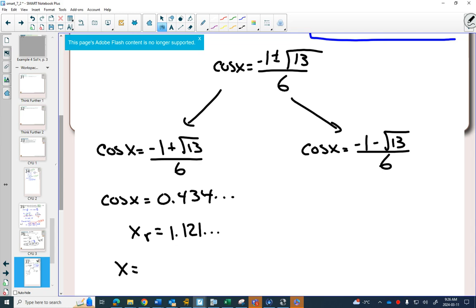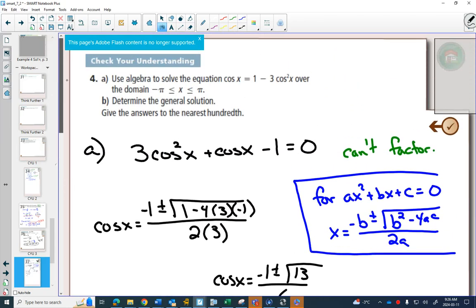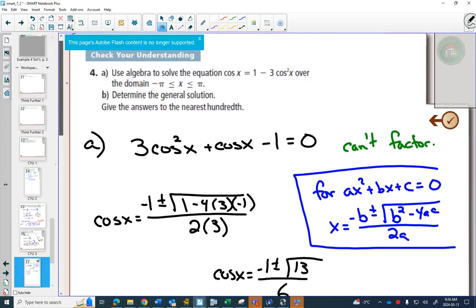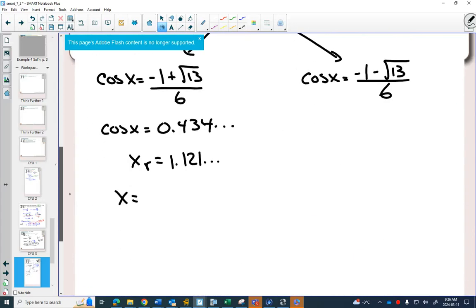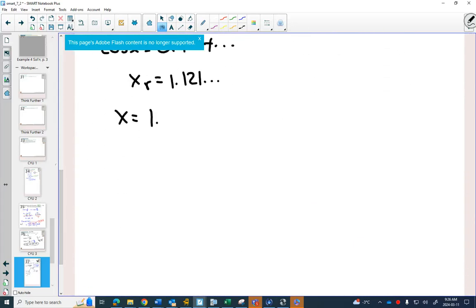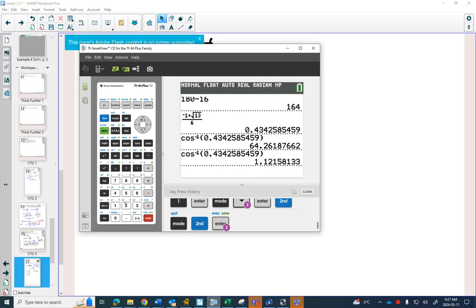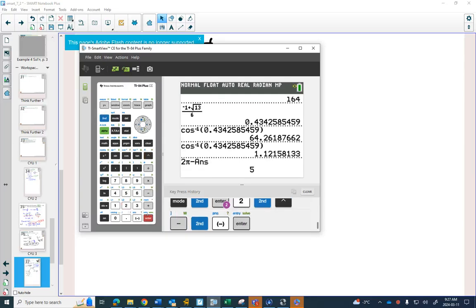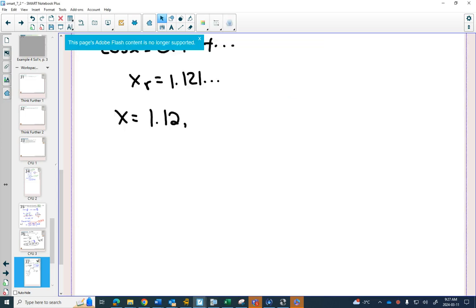And I get a reference angle of 1.121. So what do they want us to round to? Nearest hundredth. So in quadrant 1, it'll be 1.12. And then I also need an answer in quadrant 4, so I go 2π minus my answer: 5.16.